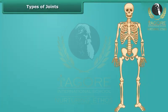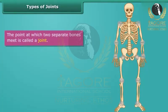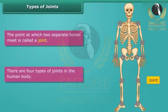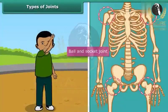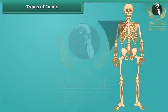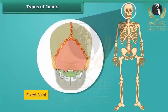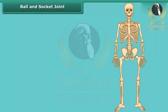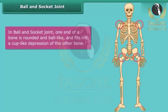Now it's time to know about joints. The point at which two separate bones meet is called a joint. There are four types of joints in the human body: ball and socket joint, hinge joint, pivotal joint, and fixed joint. In a ball and socket joint, one end of a bone is rounded and ball-like and fits into a cup-like depression of the other bone. It provides movement in any direction.